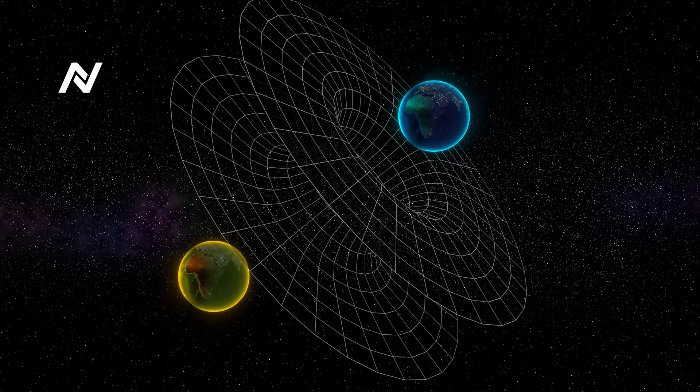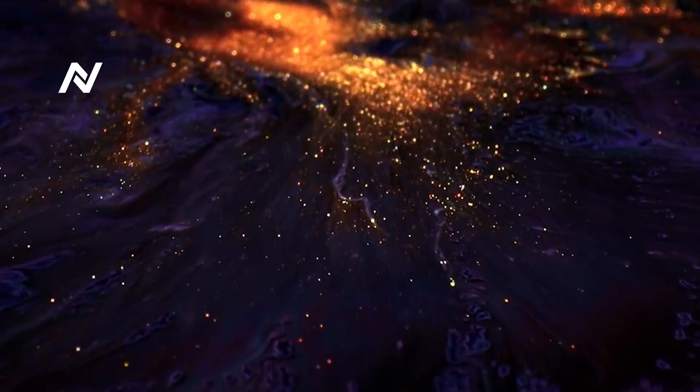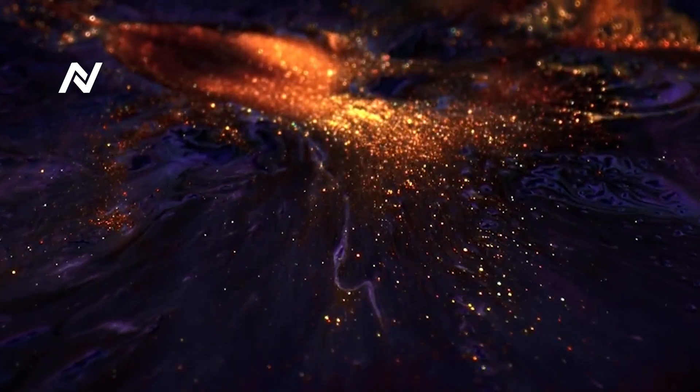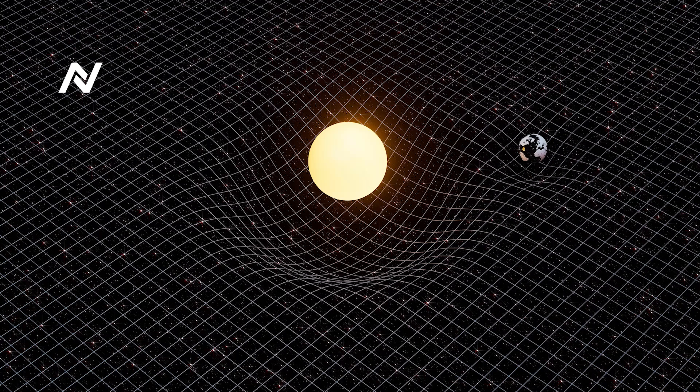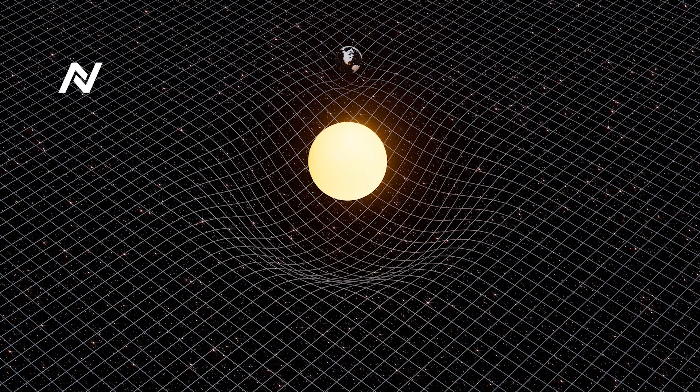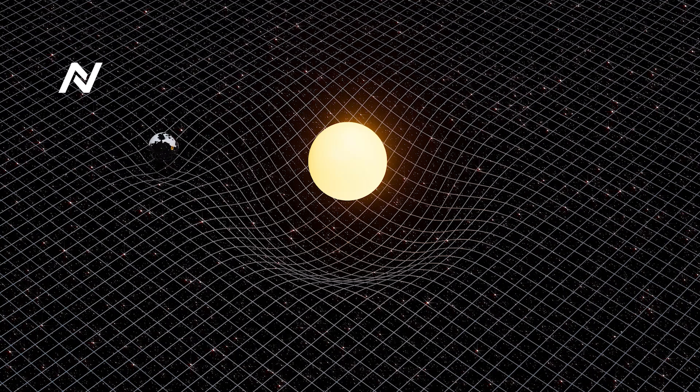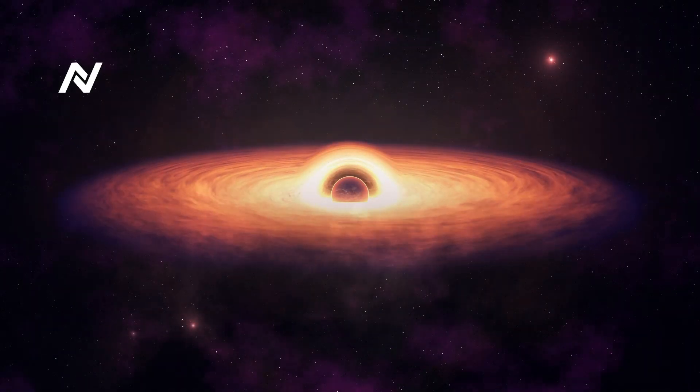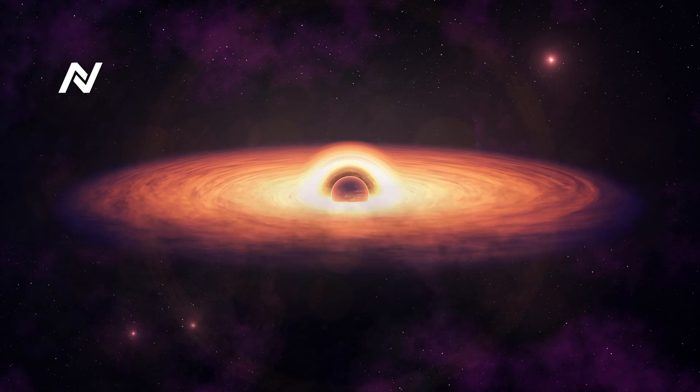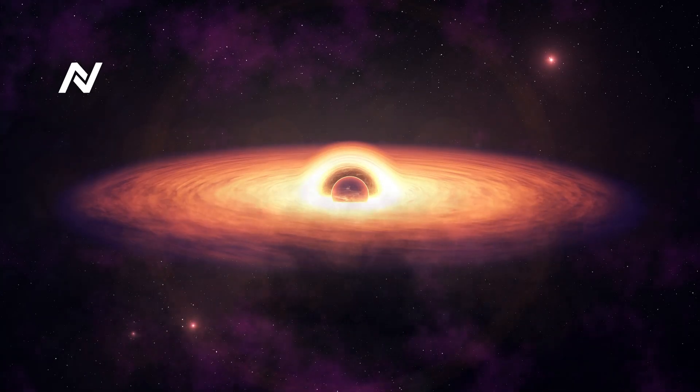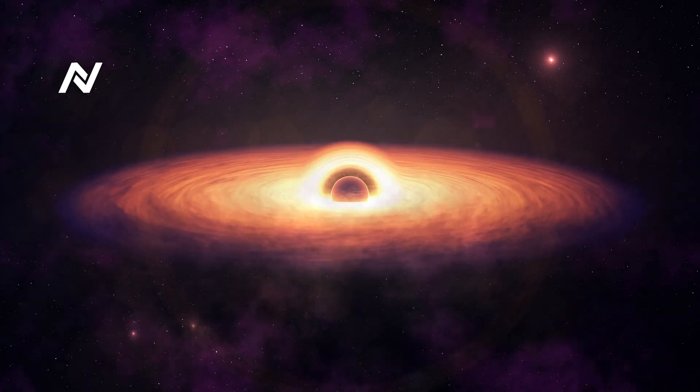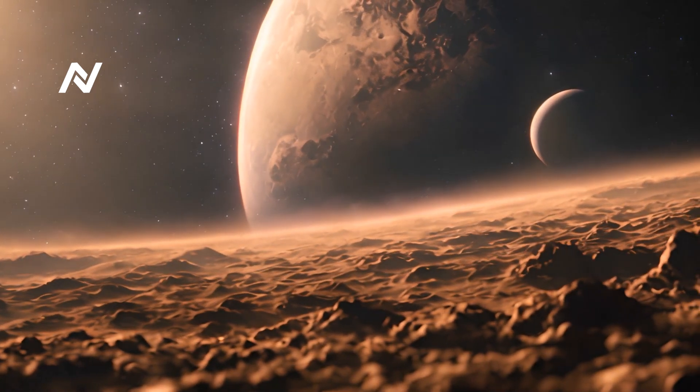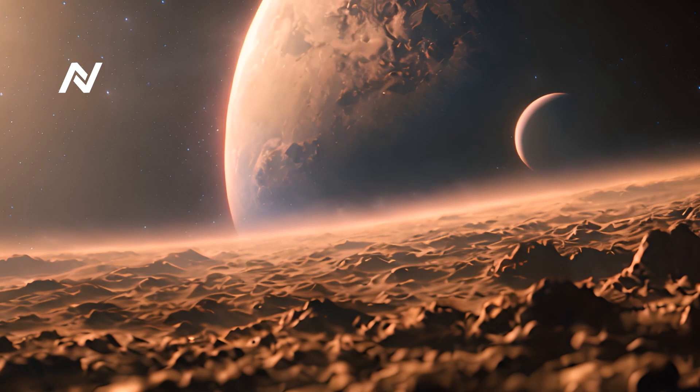Now think about this. What if, rather than only understanding space-time through equations and theories, we could actually see it? Would space-time look like a vast ocean with waves flowing through it, rippling with the movement of planets and stars? Would massive objects like black holes create whirlpools or vortexes in the fabric, twisting and distorting everything around them? Would time itself appear as a river, bending and slowing near massive objects and flowing more quickly in empty space?